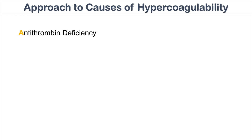The next A in CALM APES is antithrombin deficiency. Antithrombin inhibits thrombin to stop or slow down coagulation. So if we have a deficiency in antithrombin, we won't be able to inhibit thrombin as well, leading to increased coagulation.